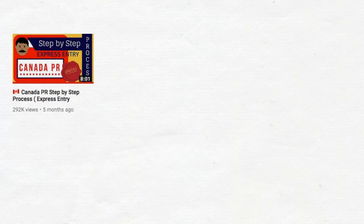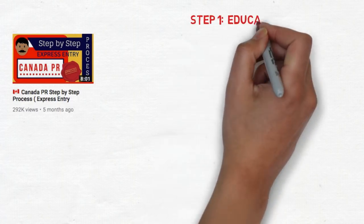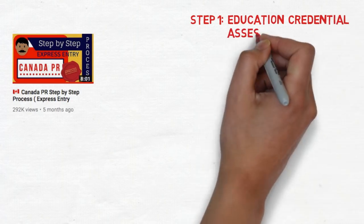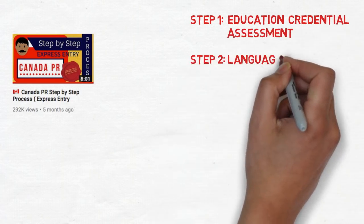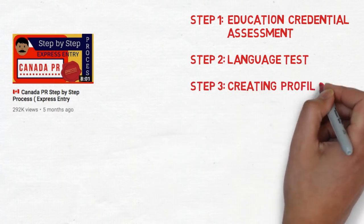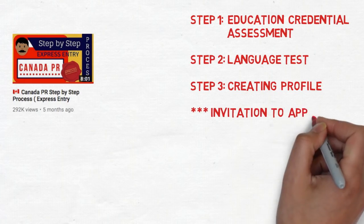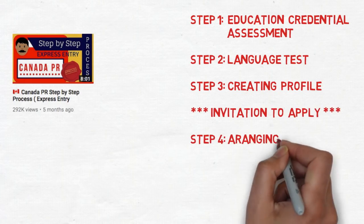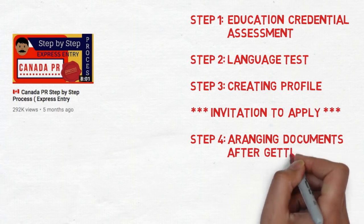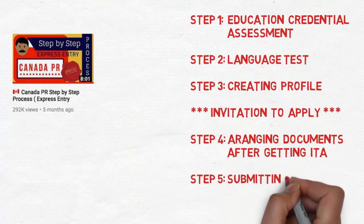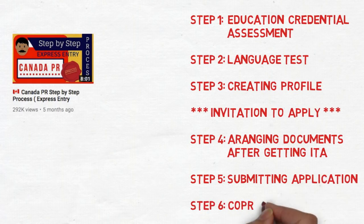I made this video — it was actually my second video for this channel — where I divided the complete process into six simple steps. I'll take the help of this video to explain the timelines. The six steps are: Step 1 is your ECA, Step 2 is your language test (IELTS, CELPIP, or TEF), Step 3 is creating your profile, Step 4 is getting an ITA, Step 5 is arranging documents after the ITA, and Step 6 is getting the COPR or visa stamping.